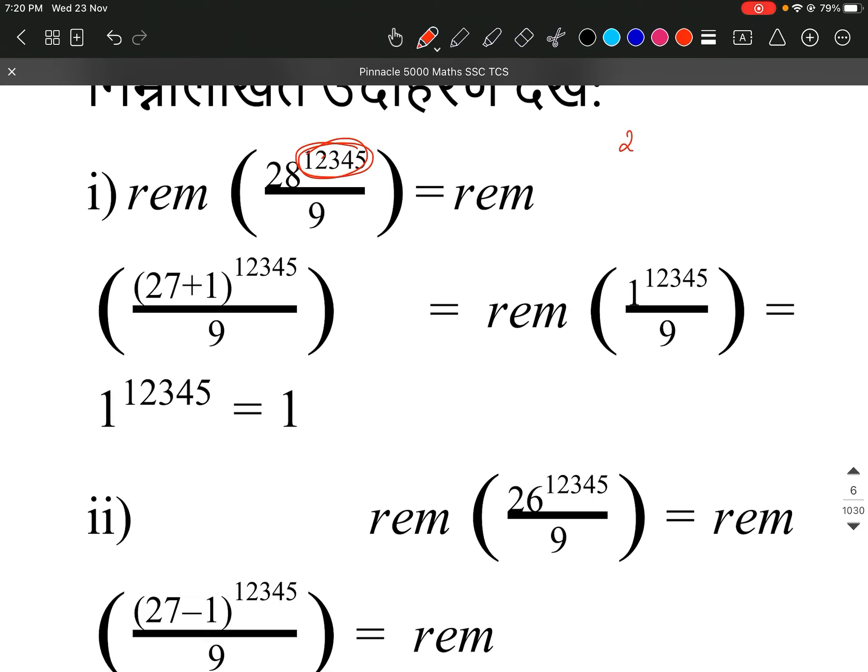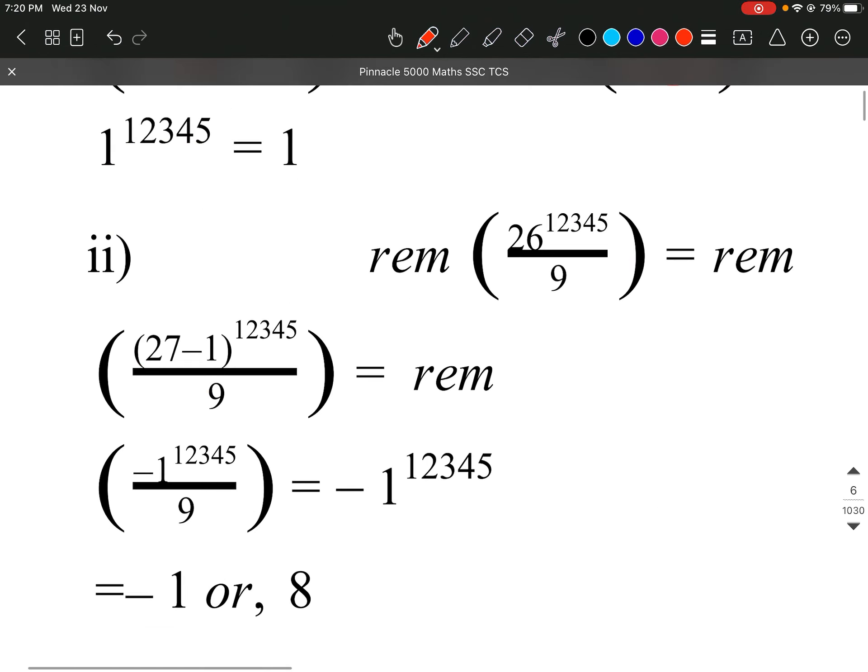27 plus 1 to the power 12345 divided by 9. Now 27 to power this, it will divide by 9 in the whole way. In the last we have to take remainder, which is 1 to the power 12345, so the answer will be 1.